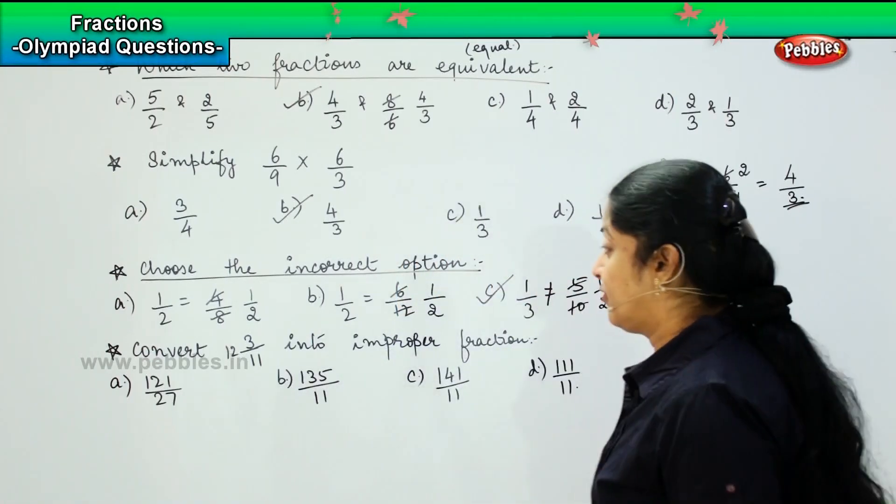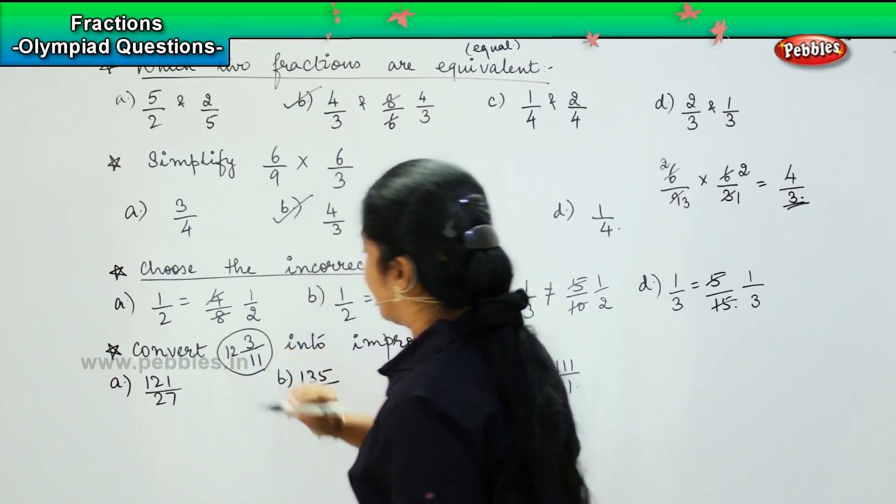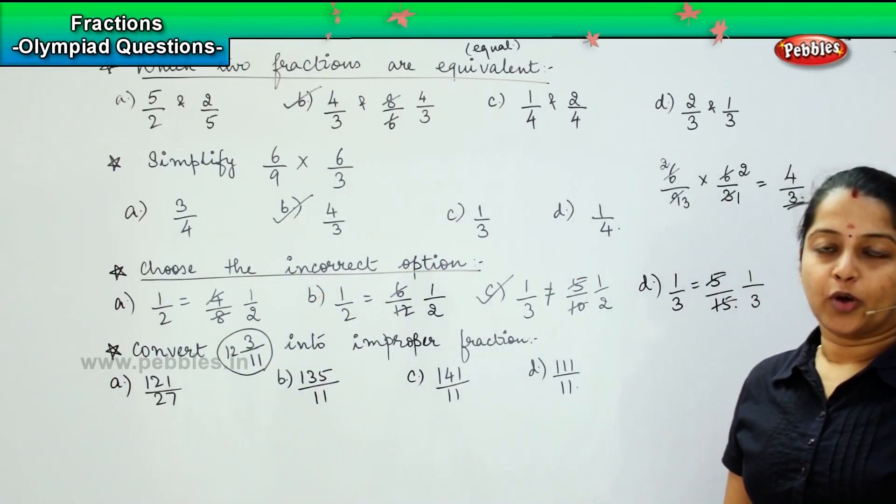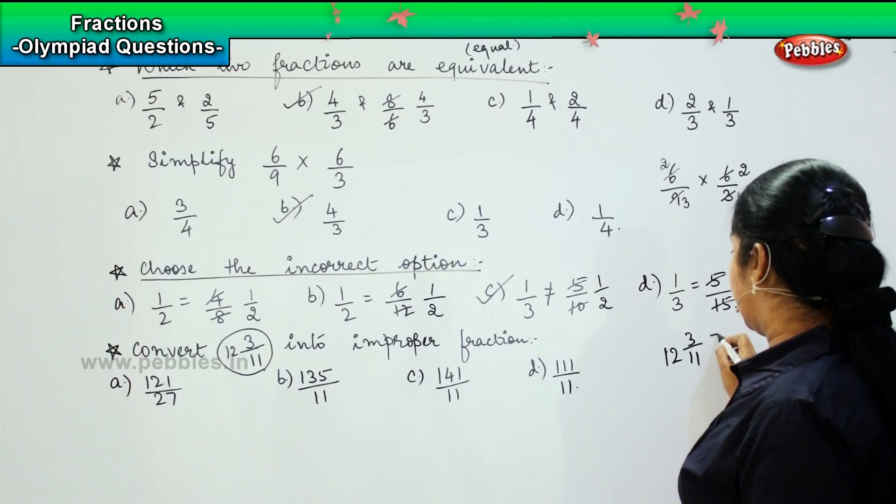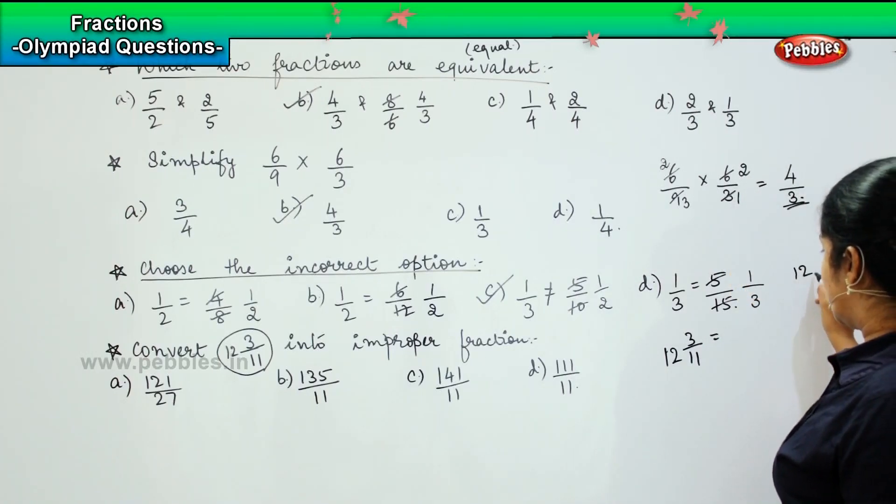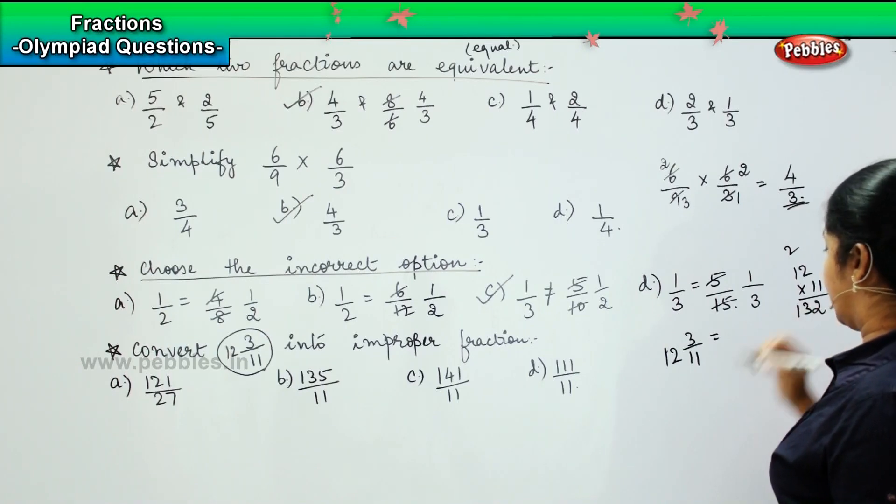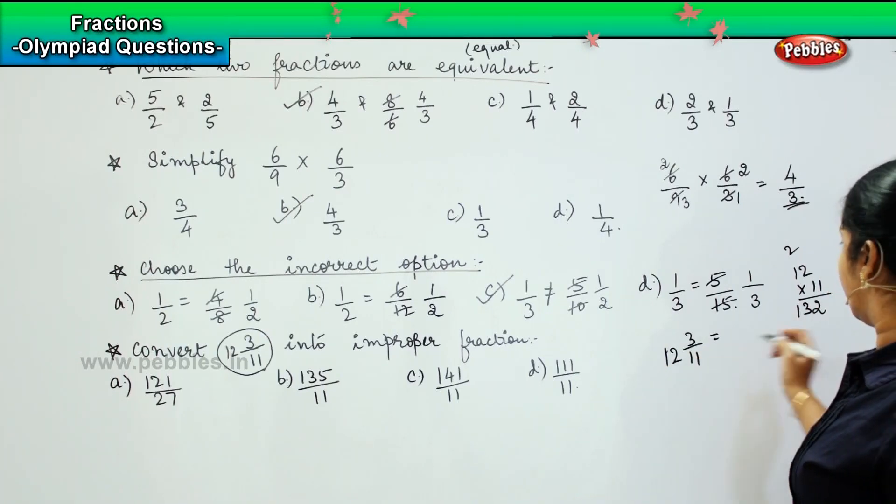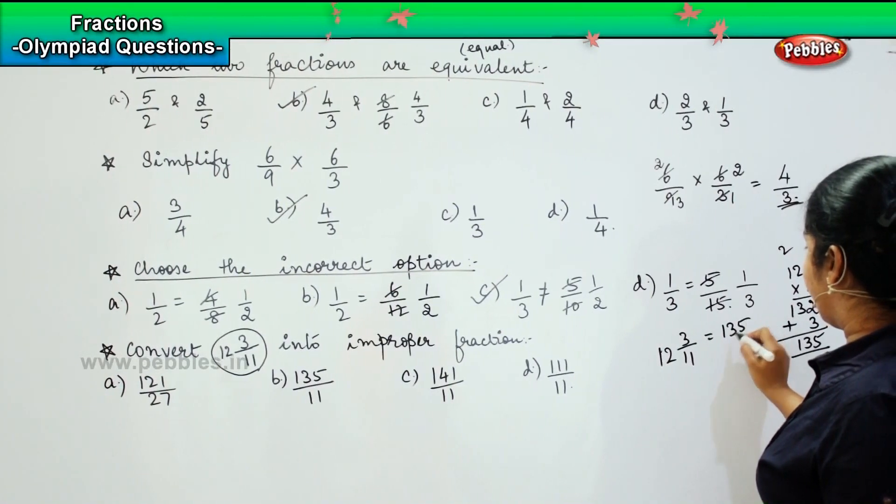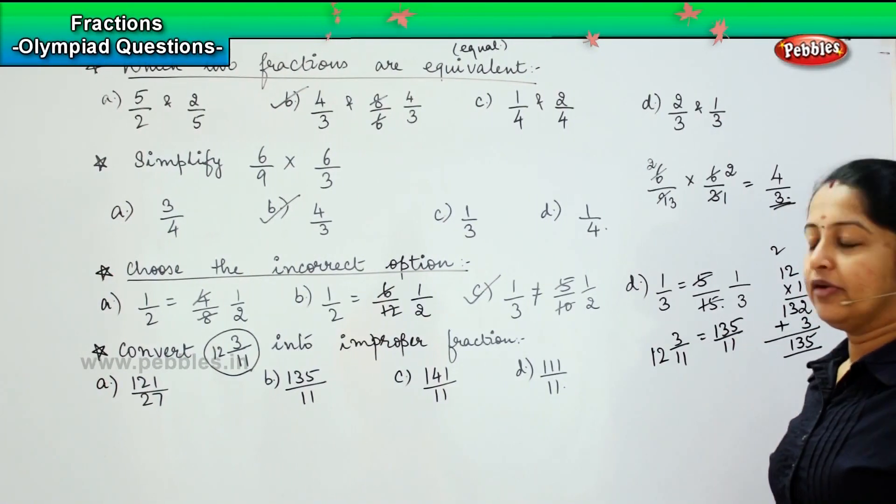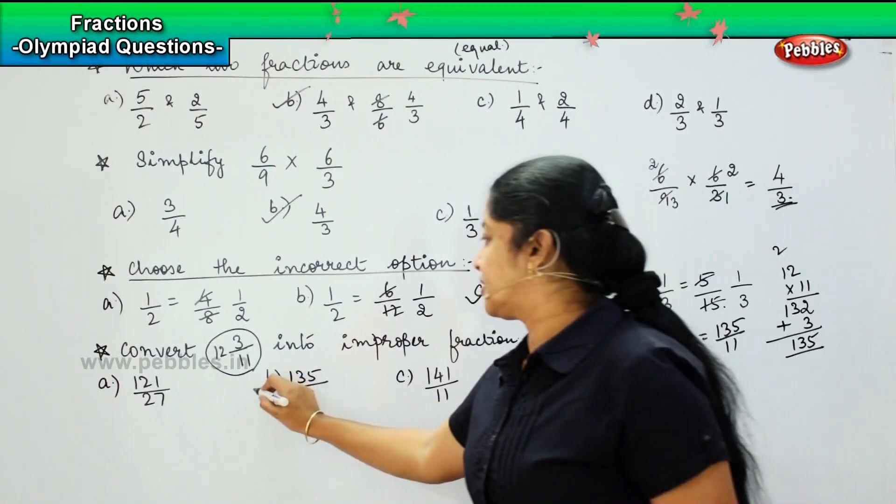Now we have to change this mixed number into an improper fraction. The number is 12 and 3/11. First we multiply 12 times 11: 11 times 2 is 22, 11 times 1 is 11, 11 plus 2 is 13, so it is 132. Plus we add this 3, so 2 plus 3 is 5, giving us 135/11, that is option B.